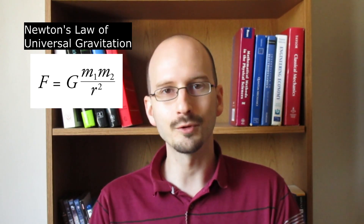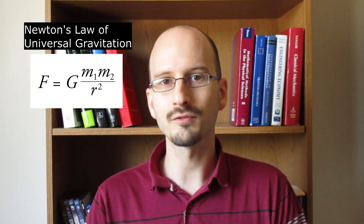Newton also wrote down another law, but it's not given a number because it's different in character from the laws of motion. This is Newton's Universal Law of Gravity, which says that the strength of the gravitational force between two objects depends on the masses of the two objects and the distance between them. If either of the masses gets larger, the gravitational force between them increases. And if the separation distance increases, the force gets weaker — that's why the masses are in the numerator of the fraction and the distance is in the denominator.